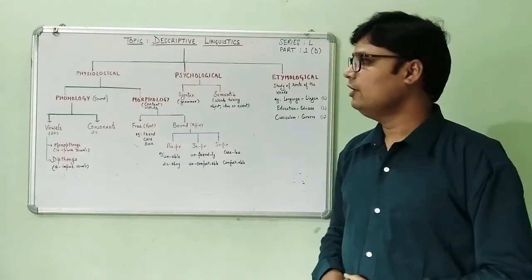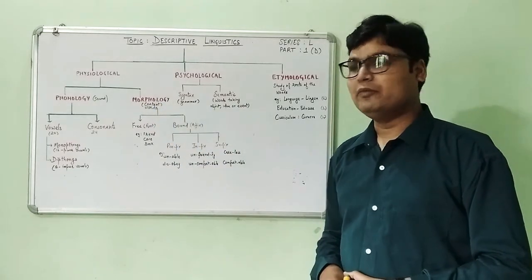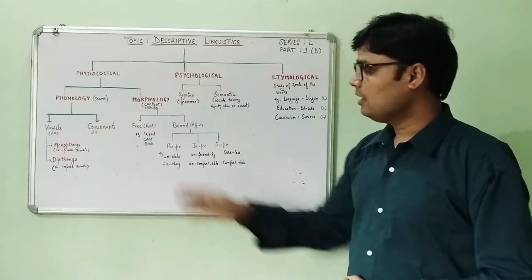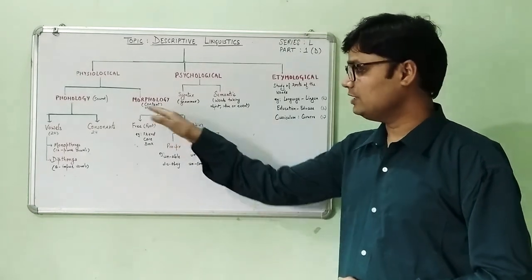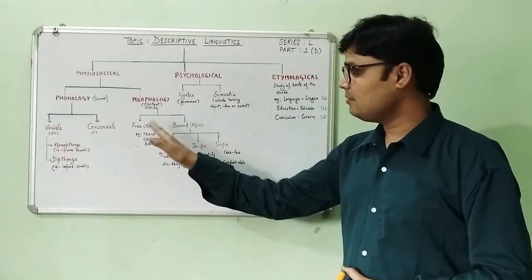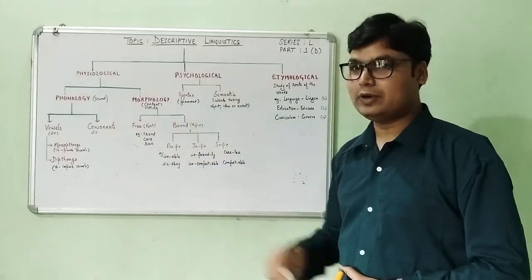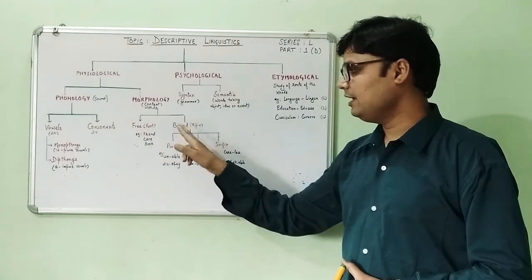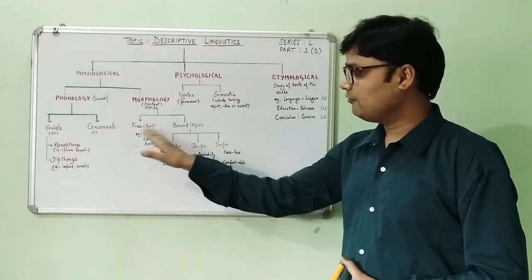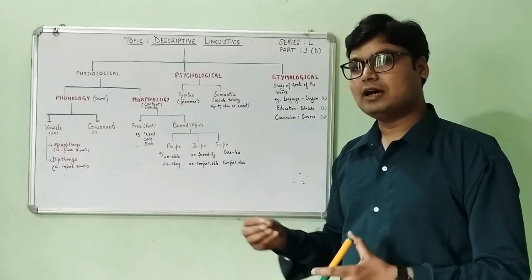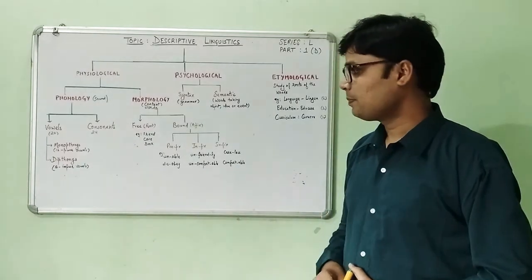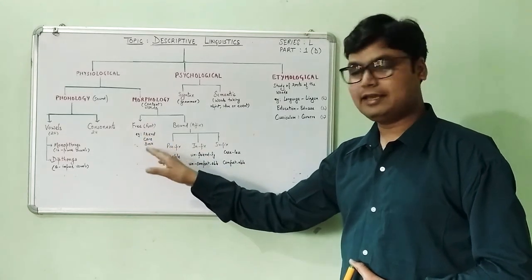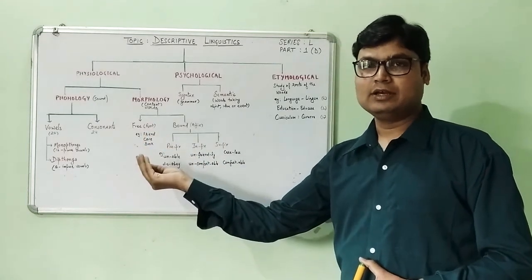The other aspect of physiological is morphology which deals with content and words of a language. The study of words, which is called morphology, can be divided under two heads: free and bound. The free words are the root words from which other words also erupt. For example, as I've written on the board, friend, care, and book - these are the root words.